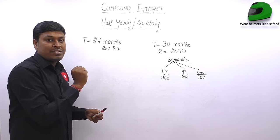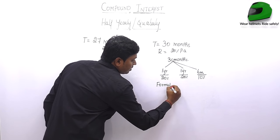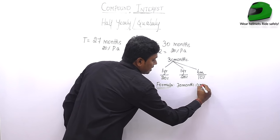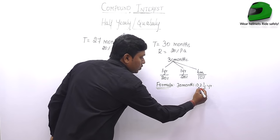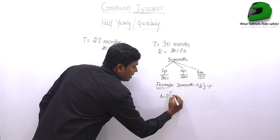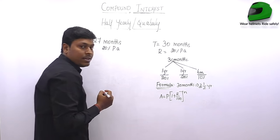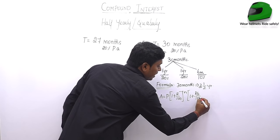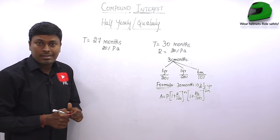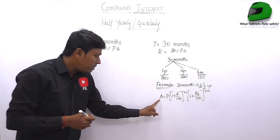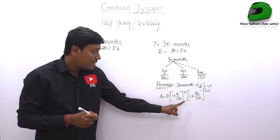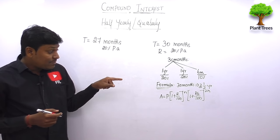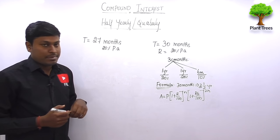In the formula method, 30 months can be written as 2½ years. For the 2-year portion, use A = P × (1 + r/100)^n. For the remaining half year, use the half-yearly formula: (1 + (r/2)/100)^(2n). For 27 months, it can be written as 2¼ years, where 2 years = 24 months and ¼ year (quarterly) = 3 months.